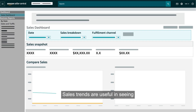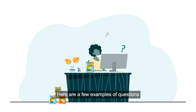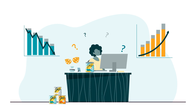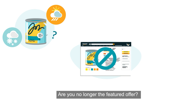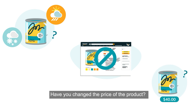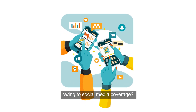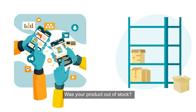Sales trends are useful in seeing how your product is selling over time. Here are a few examples of questions to ask yourself about why sales may have increased or decreased: Is your product seasonal? Are you no longer the featured offer? Have you changed the price of the product? Was the product a temporarily in-demand product owing to social media coverage? Was your product out of stock?